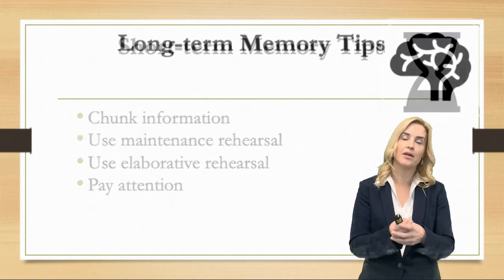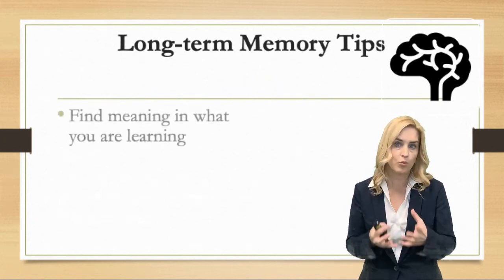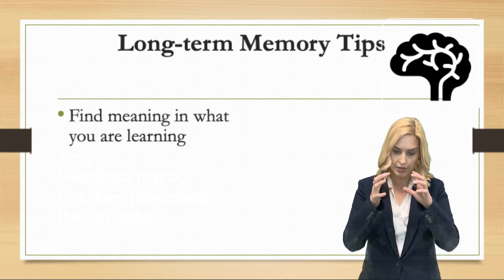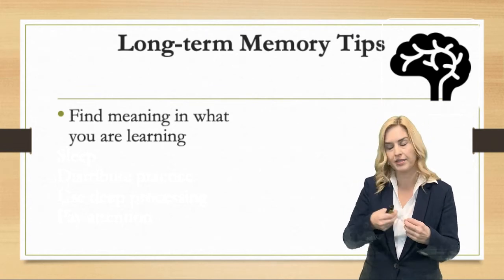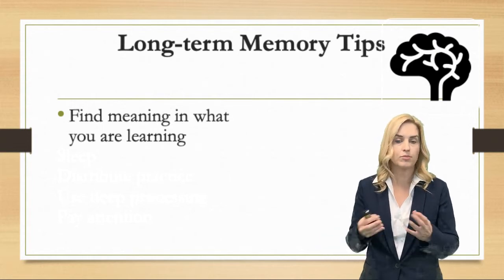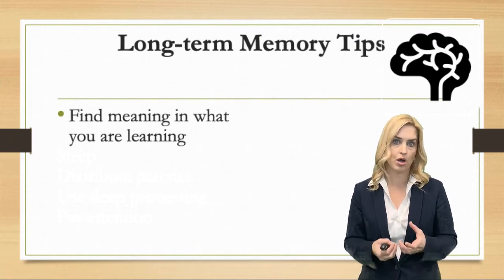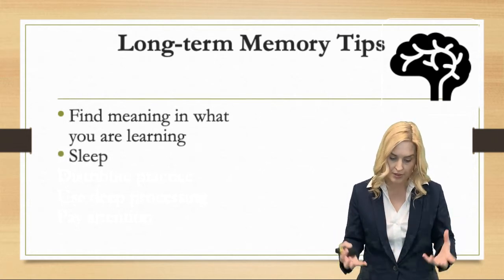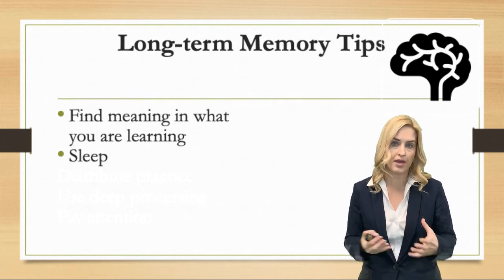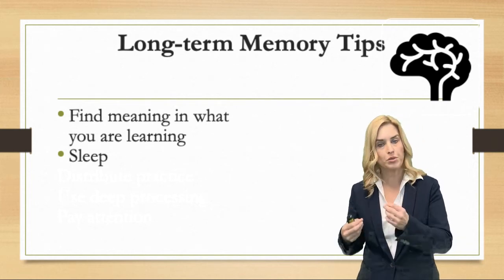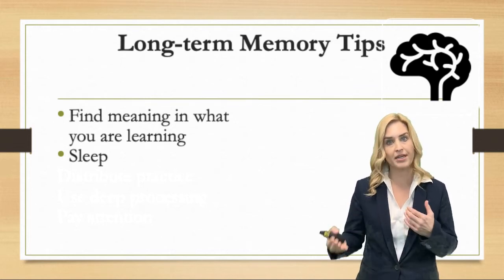With our long-term memory, some tips helpful for remembering and retrieving things are: first, find meaning in what you are trying to learn. When what we're trying to remember means something to us — emotionally, intellectually, or because we can see how we'd use it in the future — we're more likely to remember it and it's more likely to be encoded accurately. The other thing that really impacts long-term memory is getting good sleep. During sleep, memories consolidate and we organize information from throughout the day. People who've had a good night's sleep remember things better, so sleep before those important exams.